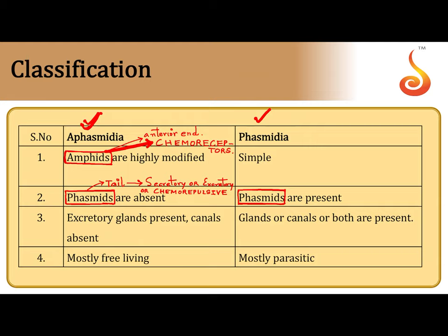In the case of Aphasmidia, the Amphids are complex and highly modified, whereas they are very simple in the case of Phasmidia. To recap: in Aphasmidia, Phasmids are absent near the tail, while in Phasmidia, Phasmids are present near the tail.